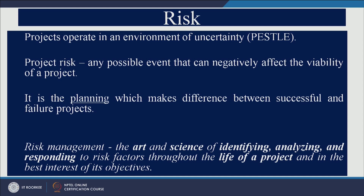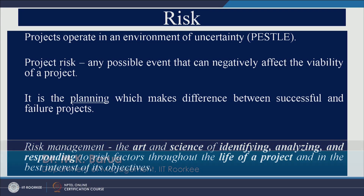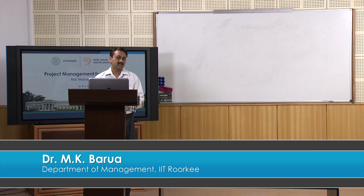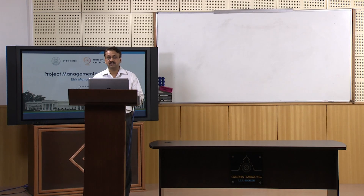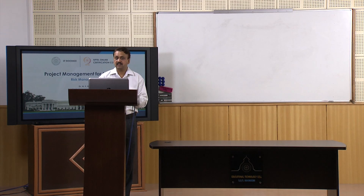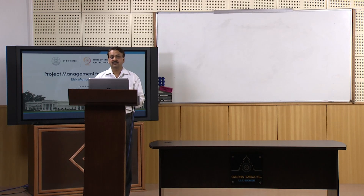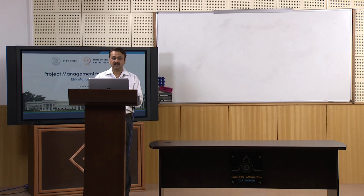Risk management is basically an art as well as a science. Why is it an art? Because there are several stakeholders involved in a project, and you need to coordinate with all of them, keep talking with them, and try to understand the requirements of different stakeholders. If you are coordinating with stakeholders properly, then most risks you can easily identify and plan for the management of those risks.